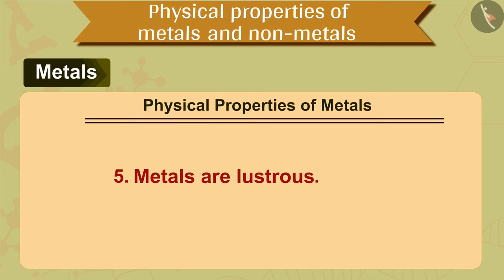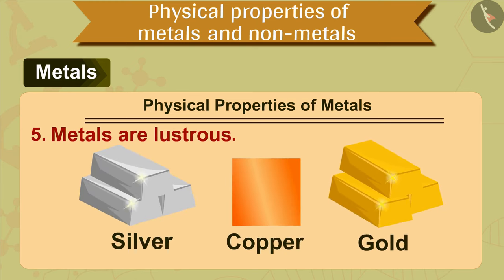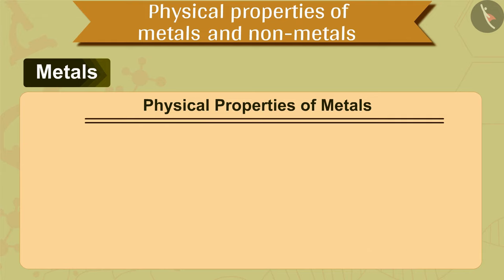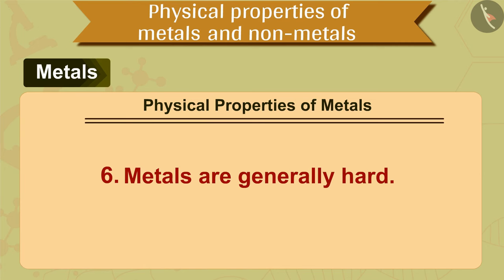The fifth property of metals is that metals are lustrous — that is, they have a shiny surface and can be polished. For example, gold, silver, and copper. The sixth property of metals is that metals are generally hard, except sodium and potassium.